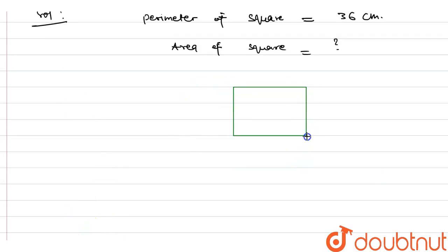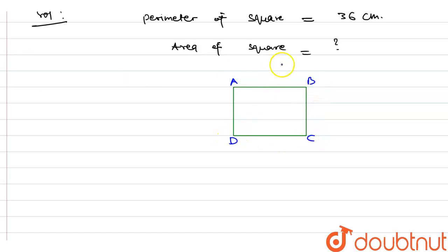Just suppose that this is the square — it is looking something like a rectangle, but suppose that this is a square. So A, B, C, D — it is a square. And if this is a square, then what we can say is all sides will be equal.